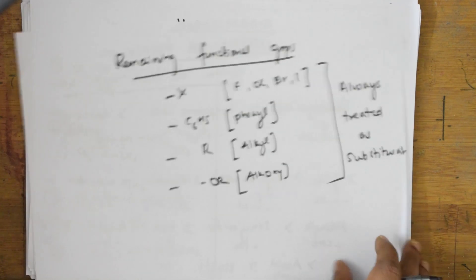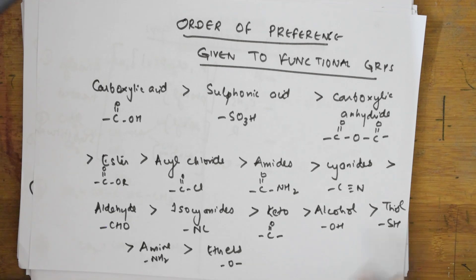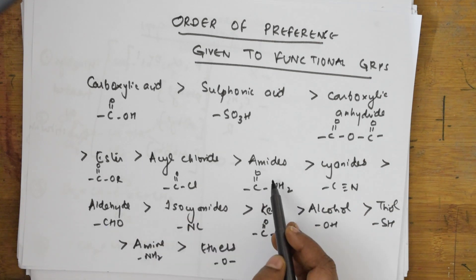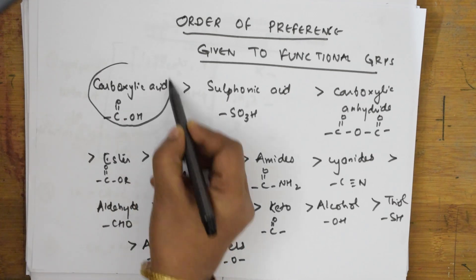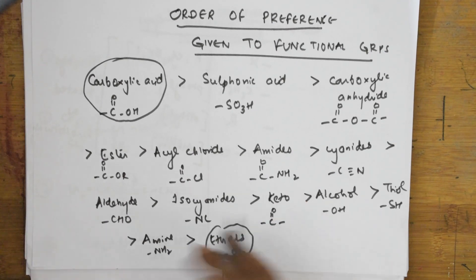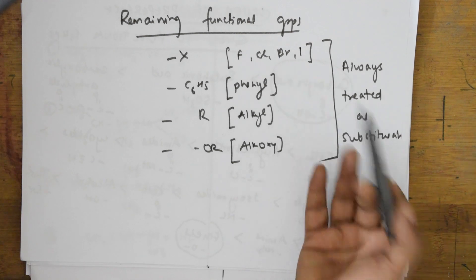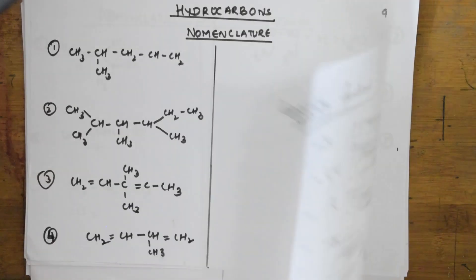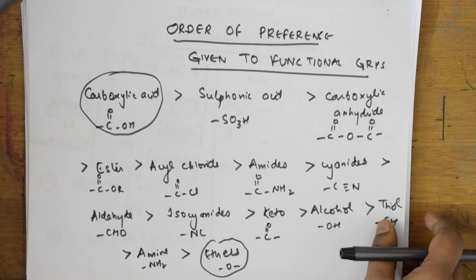So the order of functional groups is: carboxylic acid, sulfonic acids, carboxylic anhydrides, esters, acyl chlorides, amides, cyanides, aldehydes, isocyanides, ketones, alcohols, thiols, amines, and ethers — from first to least preference. Halogens, phenyl, alkyl, and alkoxy groups are always treated as substituents. Thank you for watching. My next video will cover nomenclature of hydrocarbons — stay connected and stay happy!